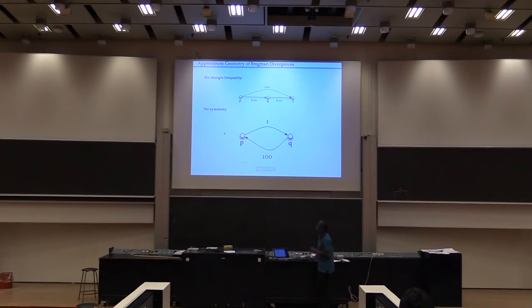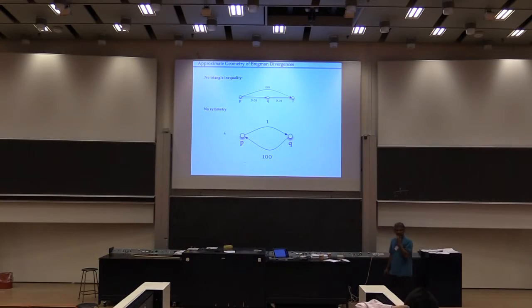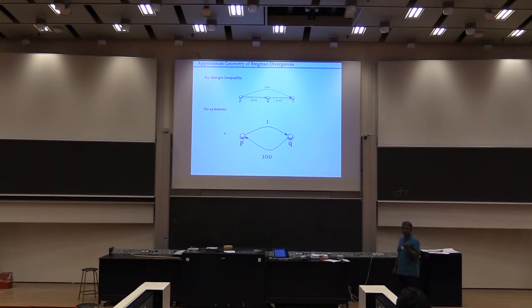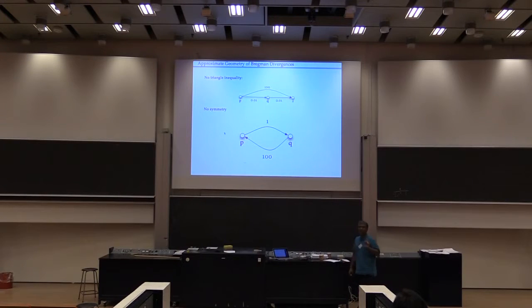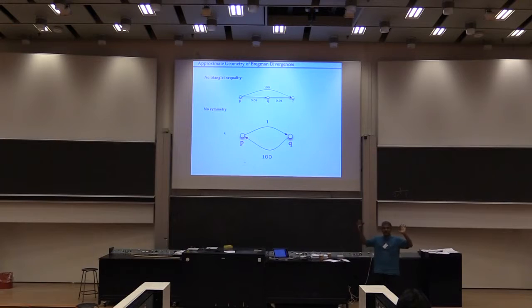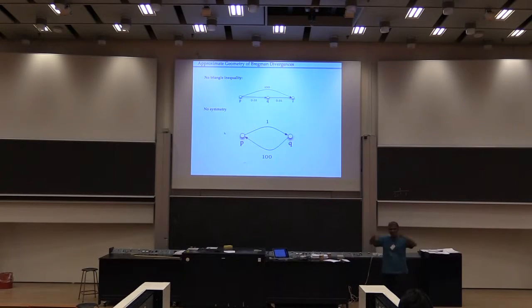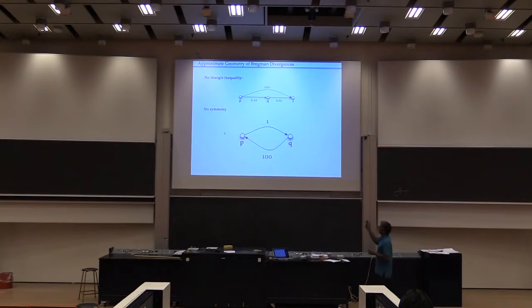Bregman divergences from a geometry point of view are kind of problematic, especially in high-dimensional geometry — they're particularly difficult. Of course, they're not going to satisfy the triangle inequality anymore. You can have a distance from p to q that's 0.01, distance from q to r that's 0.01, but the distance from p to r is 0. And they also don't satisfy symmetry — you can have a distance from p to q that's 1, but distance from q to p that's 0.